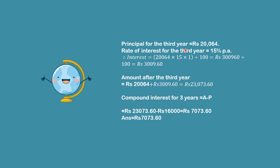The principal for the third year is the second year amount, that is 20,064. The rate of interest for the third year is 15%. Using PRT ÷ 100, interest equals 3,009.60. Amount after the third year is P plus I, that is 23,073.60. Therefore, compound interest for the three years is A minus P: 23,073.60 minus 16,000, which is equal to 7,073.60. This is the answer.